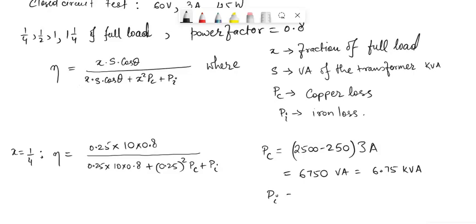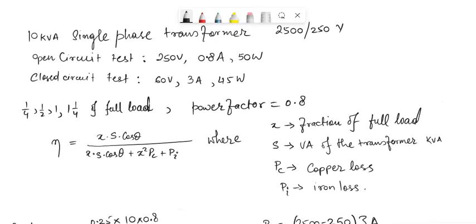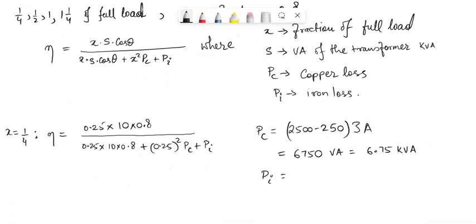pi will be simply 50 watts, which is the open circuit test wattmeter reading. So pi will be 50 watts, that is equal to 0.05 kVA.